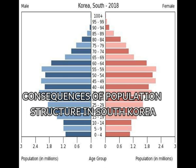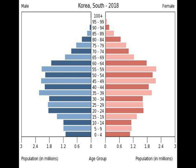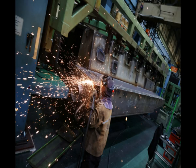Consequences of population structure in South Korea. The population pyramid of South Korea shows that 70.94 percent of the population are aged 15 to 64 years old, and 17.49 percent constitute the population aged 64 years and above. There are fewer young people than the elderly. The consequence of this is that there is a shortage of labor.